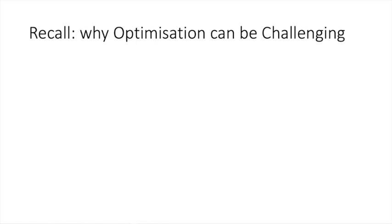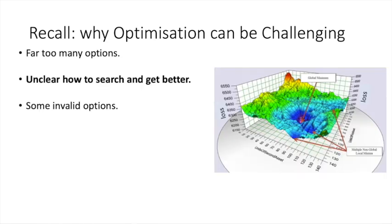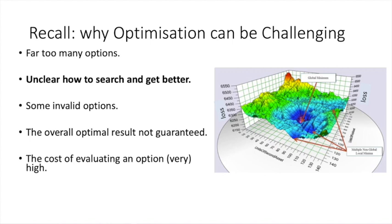This is a slide from our previous lecture that showed why optimization is such a challenging proposition. You can review the last video to see details of these challenges, but today we shall focus on the second objective, which is how to search and get better. If we have to find a better solution to our problem, which direction should we move in? We shall seek some inspiration from basic college-level maths here.